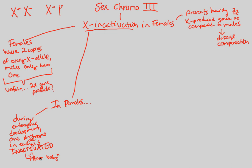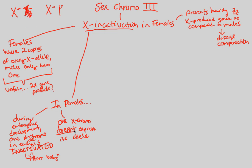In females, because of this inactivation, one X chromosome doesn't express its allele. So you have two X's, and during embryonic development — through a gene — X-inactivation happens where one X becomes irrelevant; it's not going to express its allele. We're going to see how that's distributed in females in just a second.